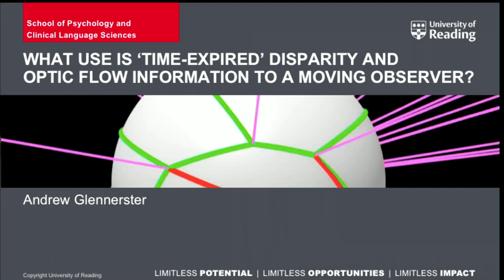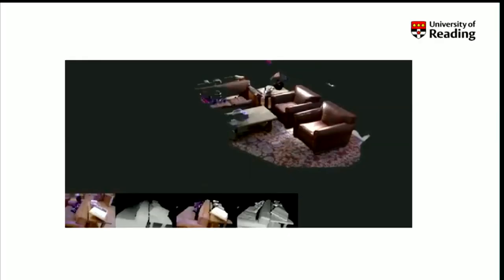The question I want to ask is: what use is time-expired disparity and optic flow information to a moving observer? When I'm looking here, I get stereo information and motion parallax information if I move my head. But if I walk over here and view the same scene, what use is that disparity or motion parallax information that I got over there? Well, none at all — unless the brain has some method of storing something built up from the 3D information here that it can also use over here.